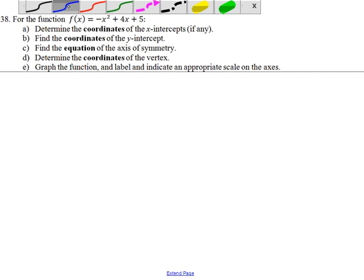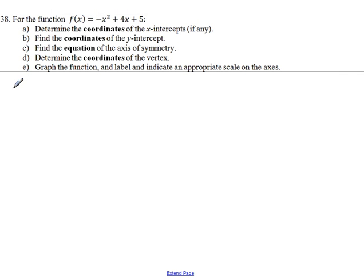Part A: Find the x-intercepts. The x-intercepts are the points where the graph crosses the x-axis. In other words, the y-values of these points are equal to 0, and y is f of x. So we're going to find these x-values by setting f of x equal to 0. So we have minus x squared plus 4x plus 5 equal to 0.